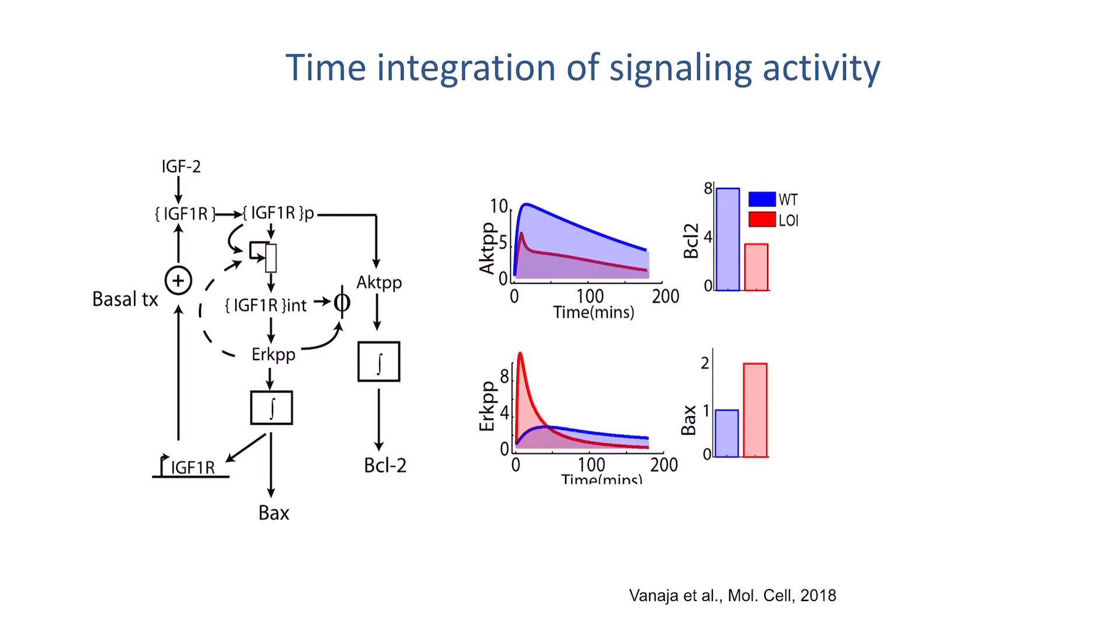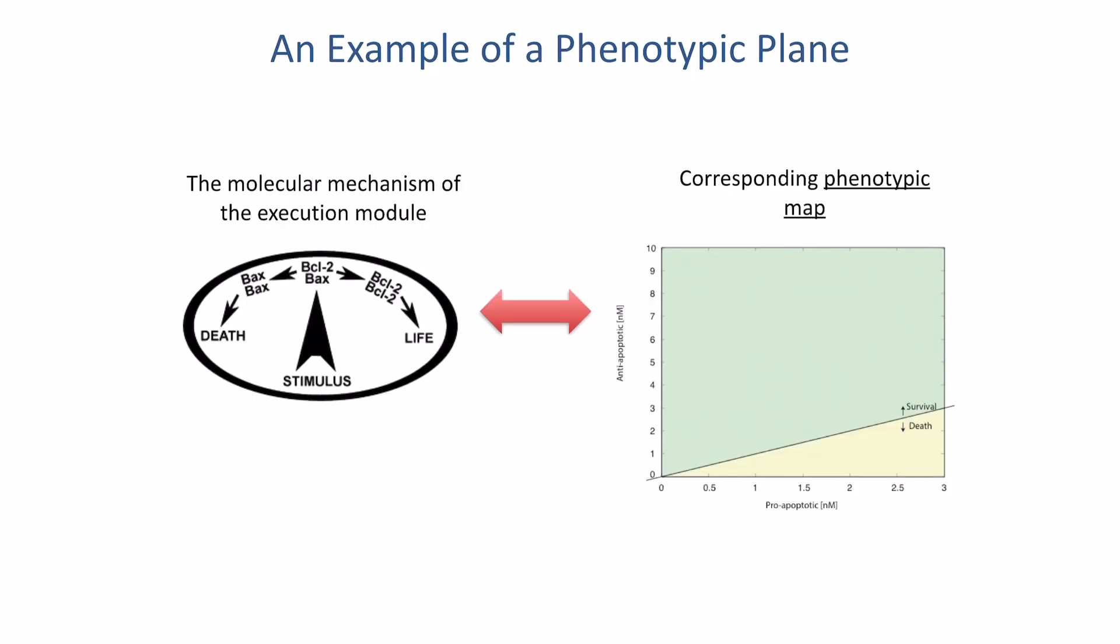The way it happens is you can even quantitatively predict how much of a change in the balance you will have. That depends on the integrated over time activity of this ERK and AKT pathways. And again, quantitatively, you can be very precise about predicting how this may change the balance of Bax and BCL.